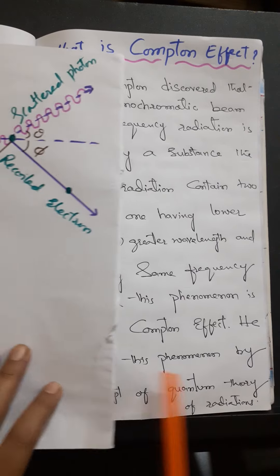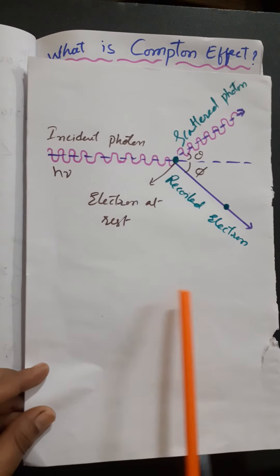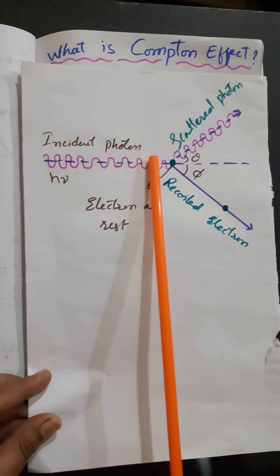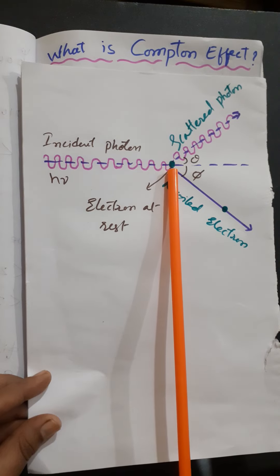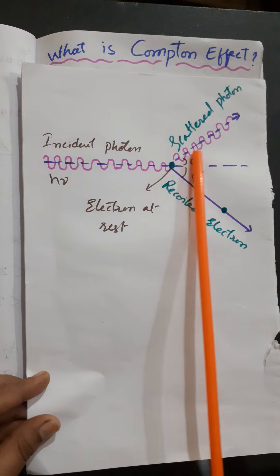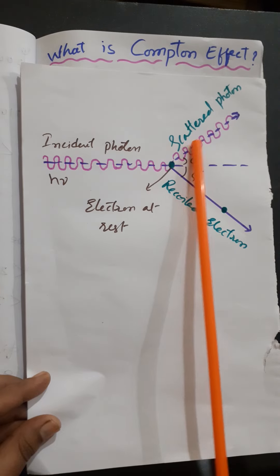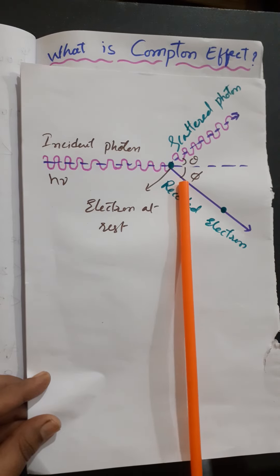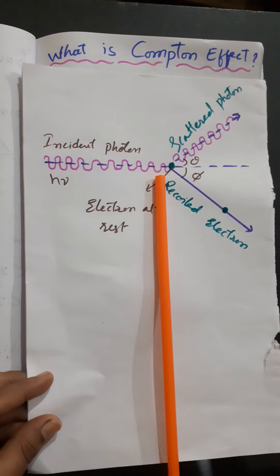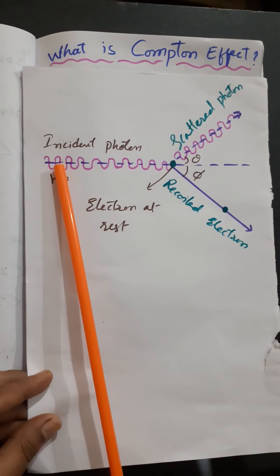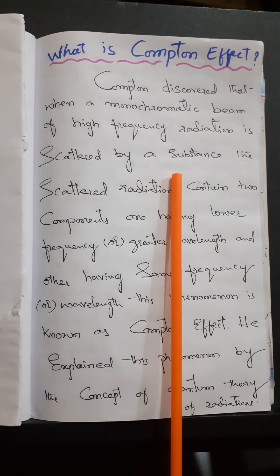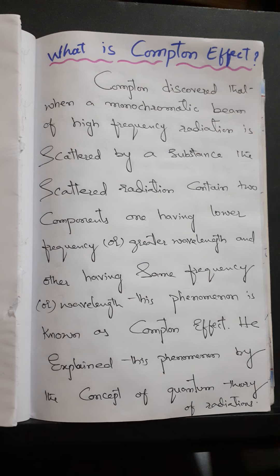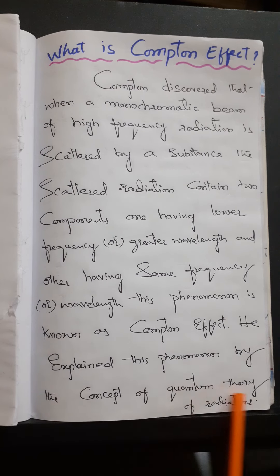He explained this phenomenon by the concept of quantum theory of radiation. According to the quantum theory, whenever a high frequency photon is scattered by an electron which is at rest, the scattered radiations contain two components: one having the same frequency as that of the incident photon, and another having a greater wavelength. We have to explain and prove this.